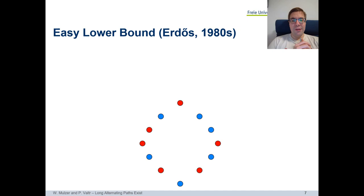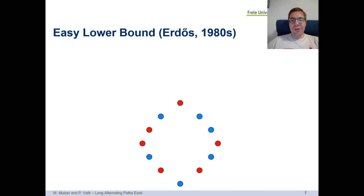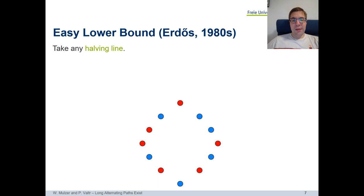The first person to propose this question was Erdős, though it was also discovered in several contexts: computational biology, protein folding, stringology, and palindromic words. We work in geometry, looking at the variant posed by Erdős in the 1980s. Paul Erdős also showed something interesting about the length of the longest alternating path in the worst case. He showed that one can always find a pretty long alternating path with the following easy argument.